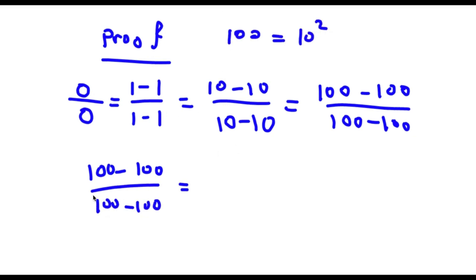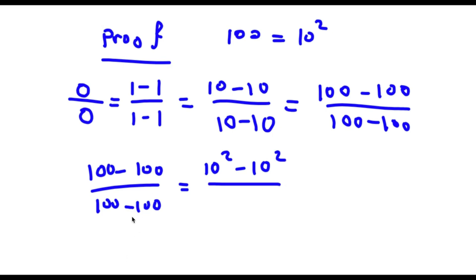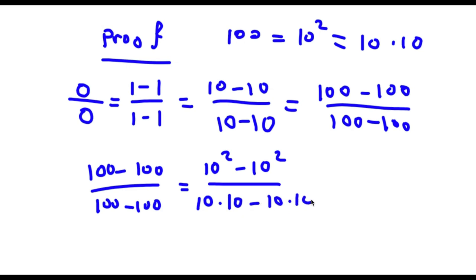So now for my numerator I'm going to switch 100 as 10 squared, so I have 10 squared minus 10. However, for my denominator this is going to be different — 100 is also the same thing as 10 times 10. I'm not going to write 10 squared; I'm just going to write 10 times 10 for my denominator. So now I have 10 times 10 minus 10 times 10.